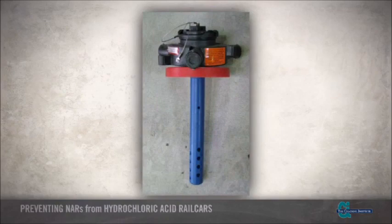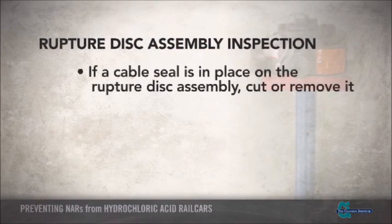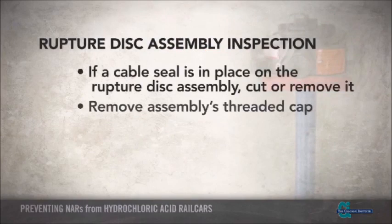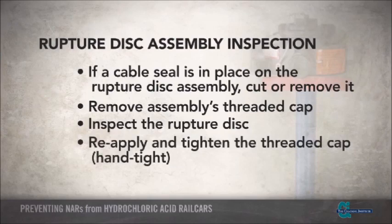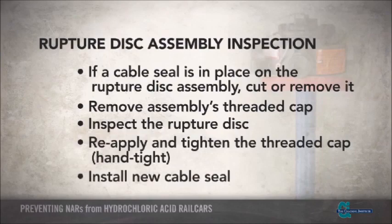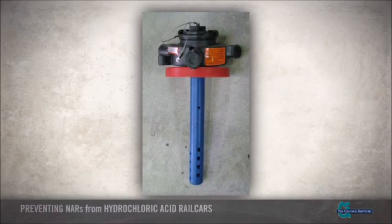If the car is equipped with a rupture disc as opposed to a pressure relief valve, careful inspection of the rupture disc assembly must be done prior to offering the rail car for transportation to ensure damage or defects are not present that could alter the intended operation of the device. In general, this can be achieved by cutting or removing the cable seal if present, removing the threaded cap, inspecting both sides of the rupture disc, reapplying and tightening the threaded cap hand tight, and installing a new cable seal. Throughout the inspection process, look for cracks, signs of excessive wear, corrosion, missing components, and other evidence of altered condition of the device.